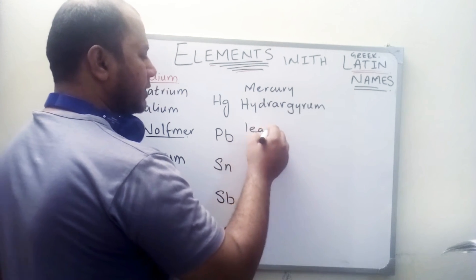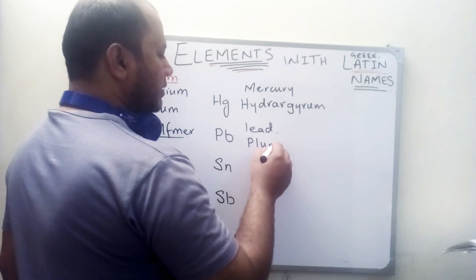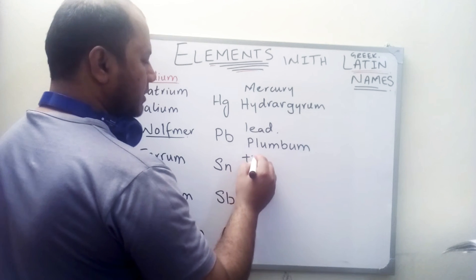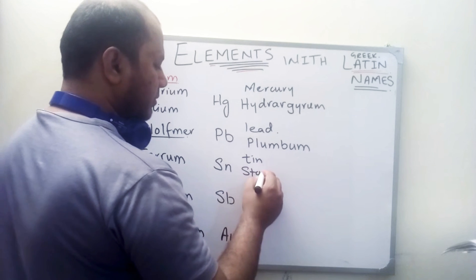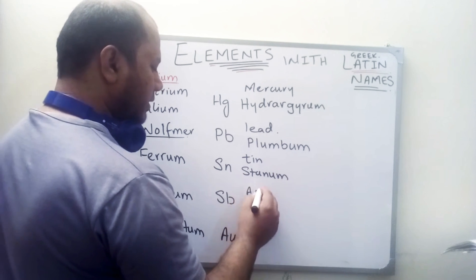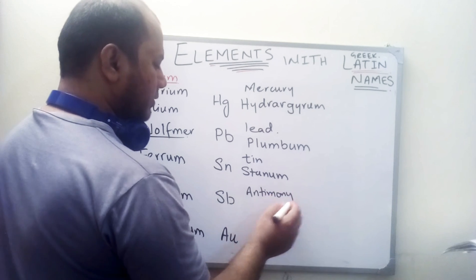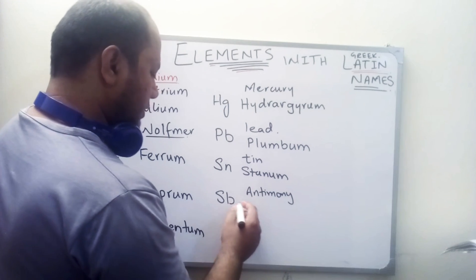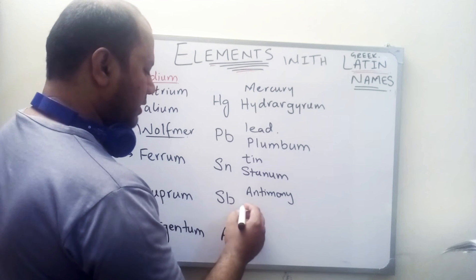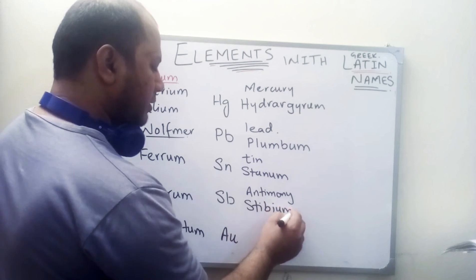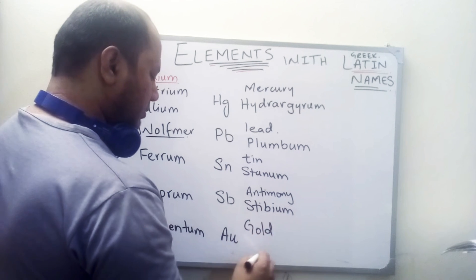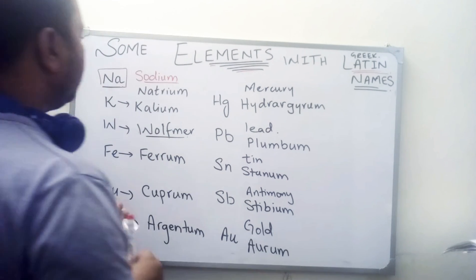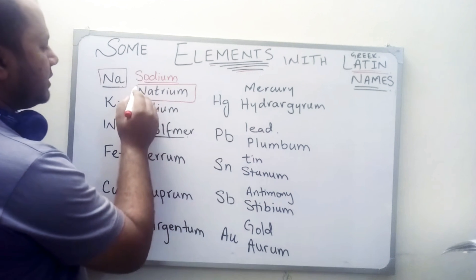We have mercury but we used to call it hydrargyrum. Then we have lead but we call it plumbum. Then we have tin but we call it stannum. Then we have antimony — and we call it stibium. And we have gold, but we used to call it aurum.